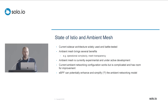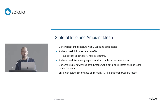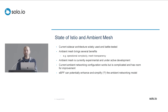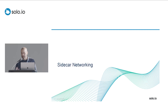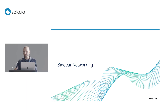As we just heard in the previous talk, the current sidecar model of Istio is widely used, very battle tested, with several people running it in production at massive scale. That being said, Ambient Mesh has a lot of benefits — things like reduced operational complexity and simplified transparency, so more applications will work out of the box. But it's still experimental and under active development. The current Ambient networking model is very complicated, and we see that eBPF can potentially help simplify and enhance it to where we feel more comfortable going into production with it.